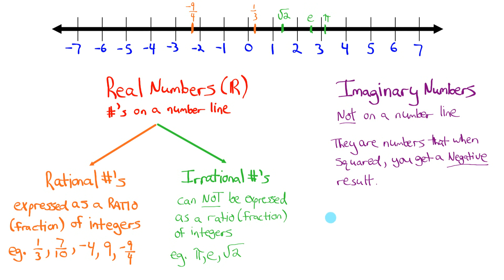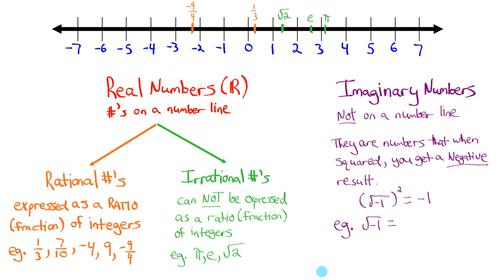What if we were to square the square root of a negative number — like, for example, negative 1? Squaring and square rooting are inverse operations of each other, so they cancel out. So the square root of negative 1 squared is negative 1. For that reason, an example of an imaginary number is the square root of negative 1. The symbol for the square root of negative 1 is i. Another imaginary number, for example, is the square root of negative 3. We would rewrite that as the square root of negative 1 times the square root of 3, which simplifies to i root 3.